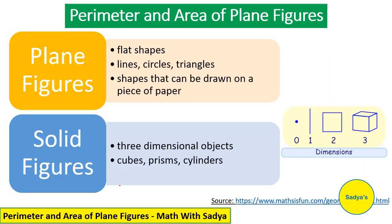Now, as the title suggests, we are talking about perimeter and area of plane figures. So let's see what plane figures are. Plane figures are flat surfaces — like lines, circles, triangles, squares, and rectangles. So any shape that can be drawn on a piece of paper is a plane figure.